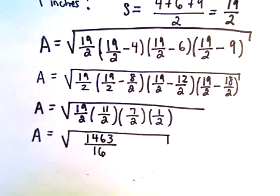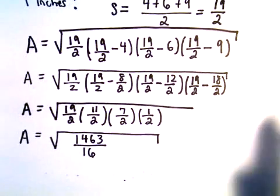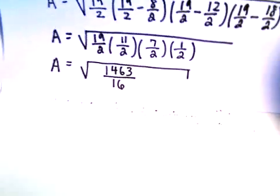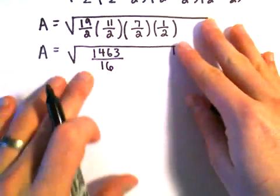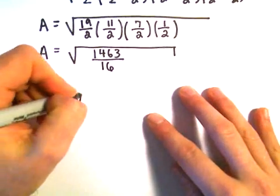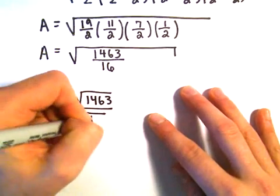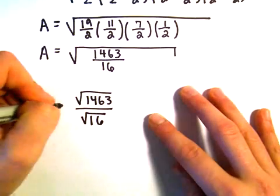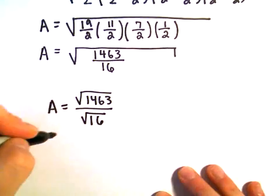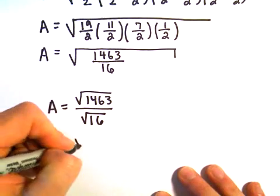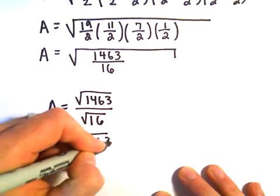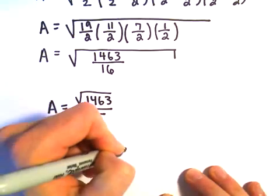And if you want to, we can even break this up a little bit further. We can always simplify this a little bit more. We can do the square root of the top over the square root of the bottom. So we can actually write this as the square root of 1463 over 4.